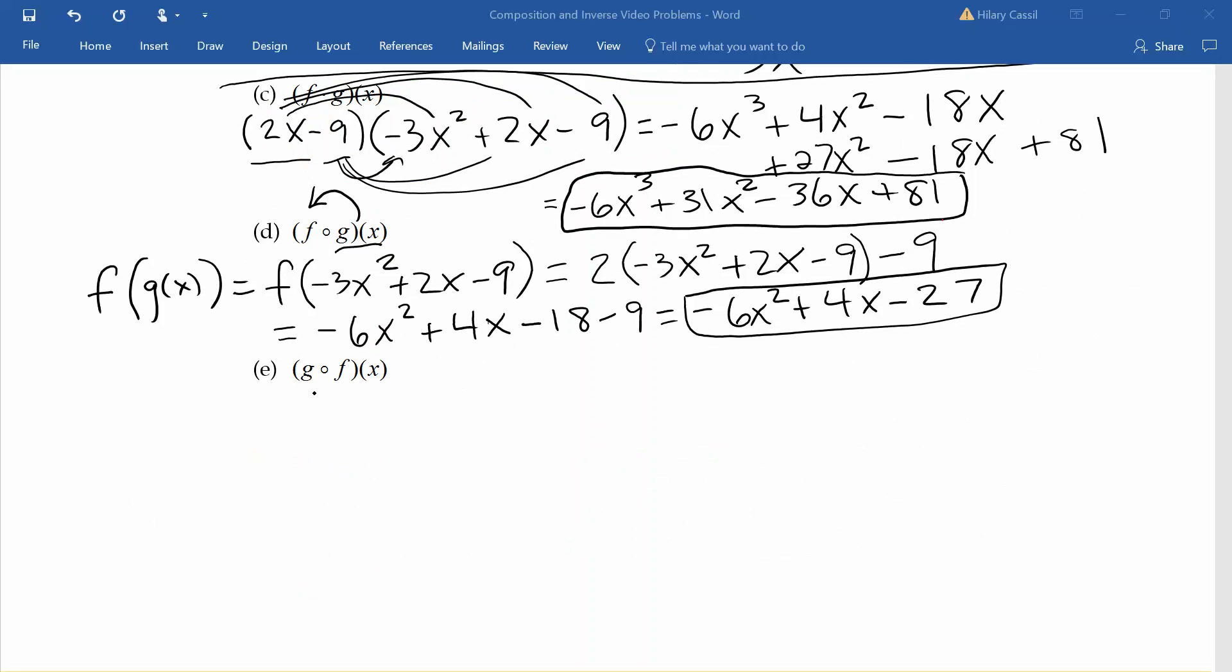Lastly, we'll take a look at g composed with f of x. This time we are putting f into our function g. I'm going to rewrite this as g of f of x. We know that f of x was 2x minus 9, so g of 2x minus 9. This means that everywhere we have an x in our function g, we are replacing it with 2x minus 9.